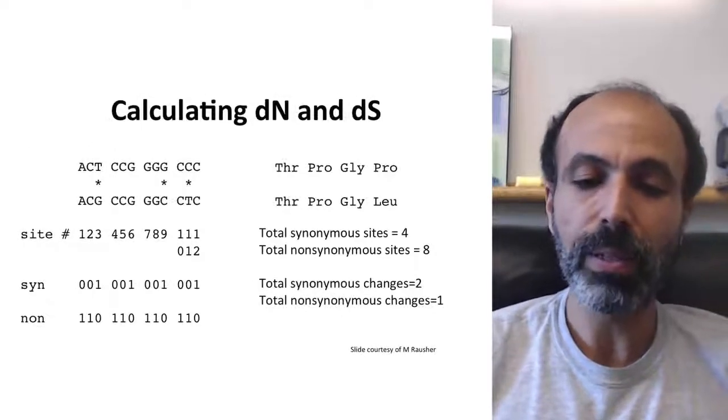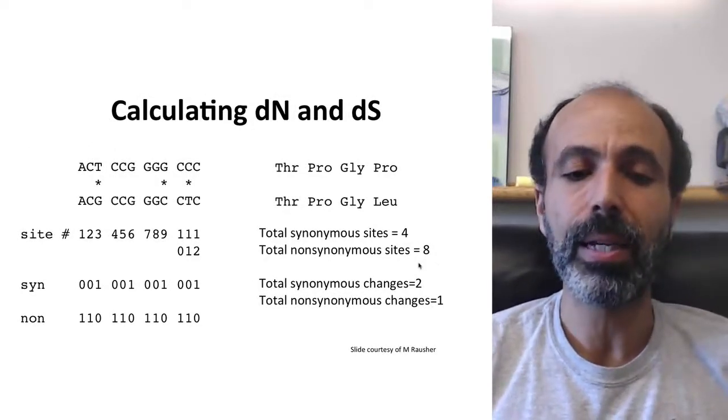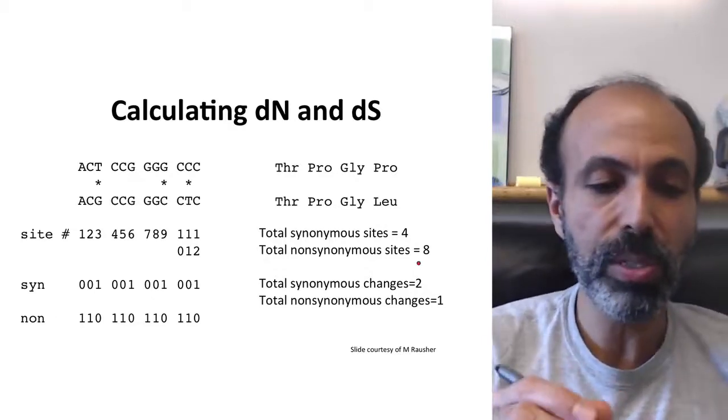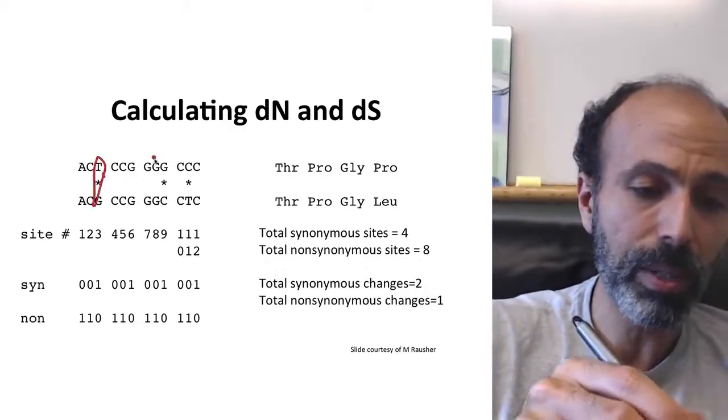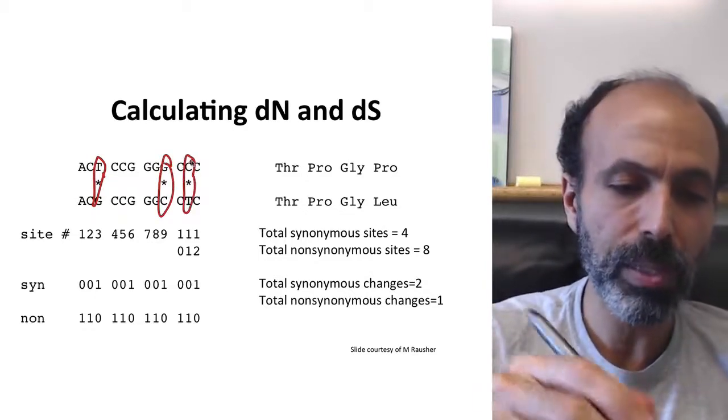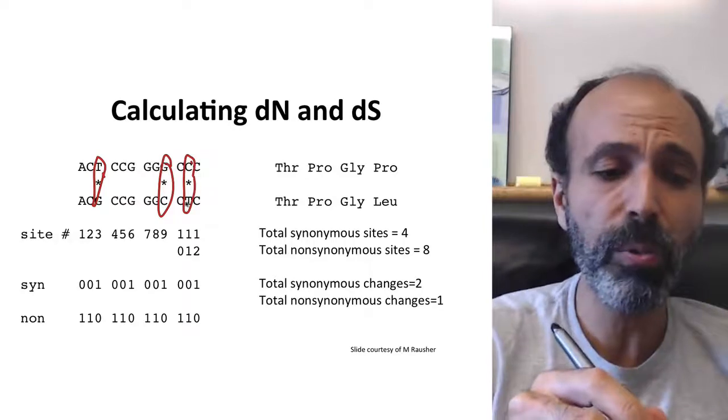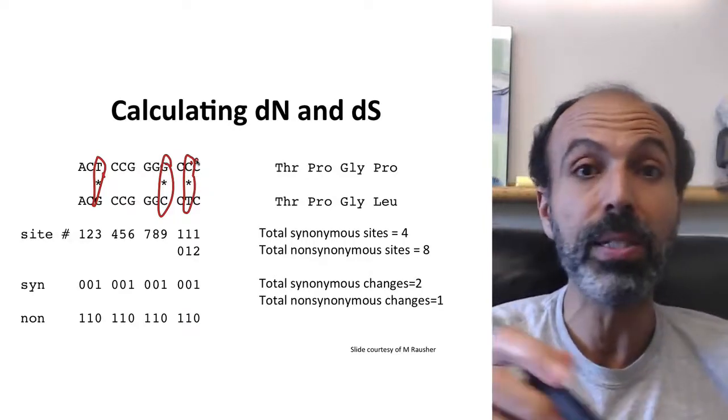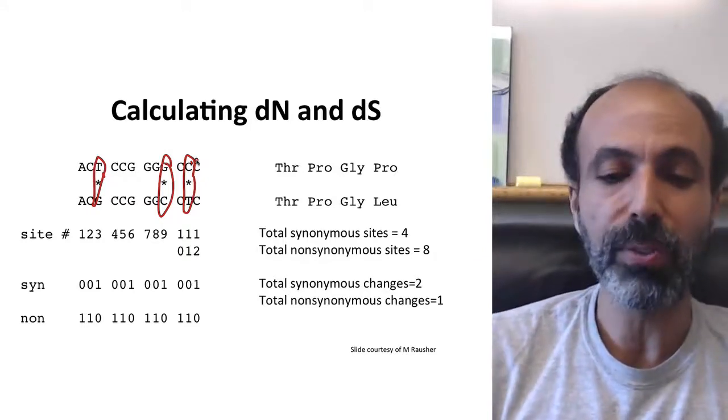So again, we have these four synonymous sites, eight non-synonymous sites. When we look at the changes we actually have, we actually have two synonymous changes. This is one synonymous change, this is the other, and we have one non-synonymous change, which is that one right there. And we're not necessarily showing a direction, we're not saying it changed from C to T. It may have changed from T to C. We don't actually know, but we're just calling these differences.